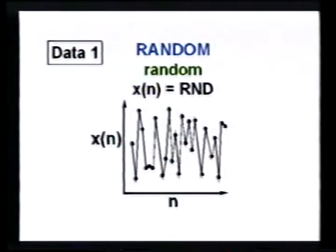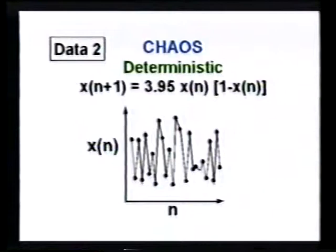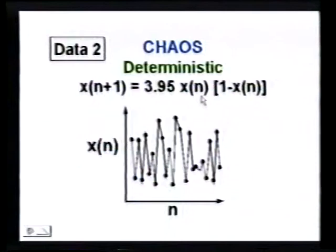The first one is random — I have a random number generator that picks a number between 0 and 1 for each point. But data set number two is actually completely different. It is absolutely deterministic, meaning the next value is 3.95 times the previous value times 1 minus the previous value.